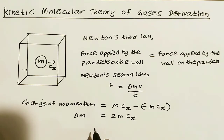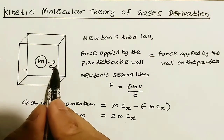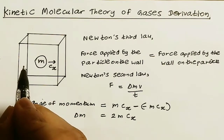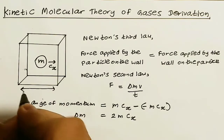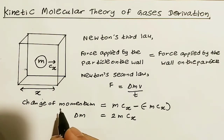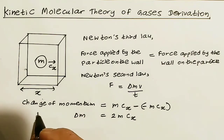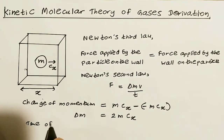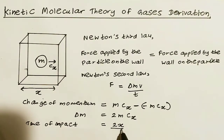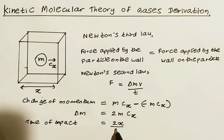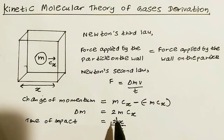Also, taking the particle to be initially starting from this position, the mean time taken for the particle to reach this particular wall and come back is equal to the distance the particle travels, which is x over the velocity. But as the particle will rebound, the time of impact is equal to 2 times x divided by the velocity cx in the x-direction. So with this particular formula, we know the time taken and also the rate of change of momentum.